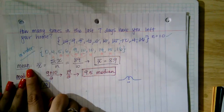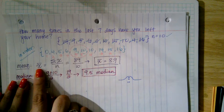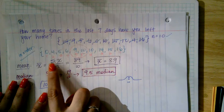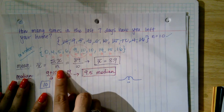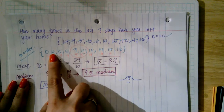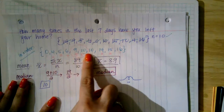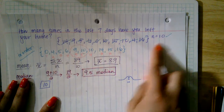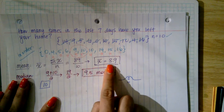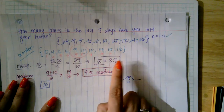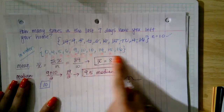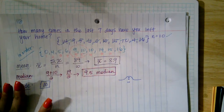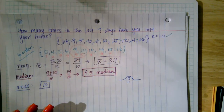Now I'm going to proceed to find the mean. The mean is x-bar — that's the symbol for the sample mean. The formula is: sum up all the values and divide by the set number. Zero plus four plus five plus six plus nine plus 10 plus 10 plus 14 plus 15 plus 16 gives me 89. Dividing by 10 gives an x-bar of 8.9, meaning on average they left home about 8.9 times in the last seven days.